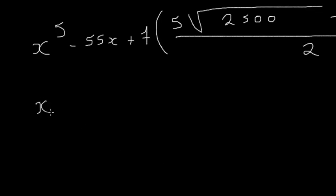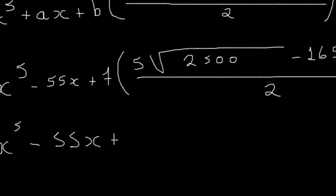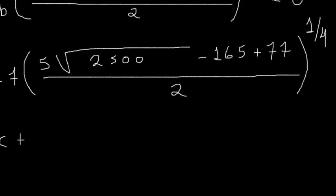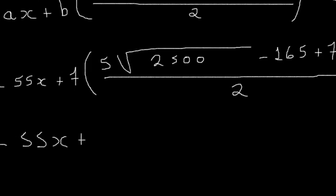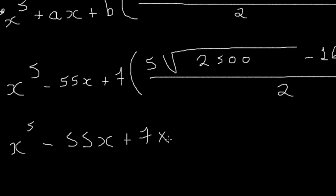Solving this equation — or rather, using the calculator to calculate: 5 times square root of 2000, 1500, and 5 times square root of 2,000,000, with B equal to 7.